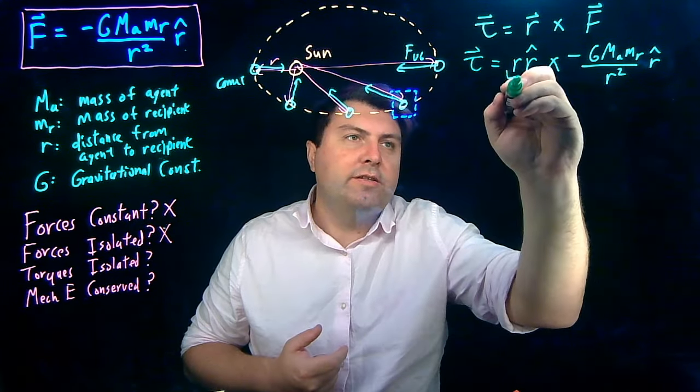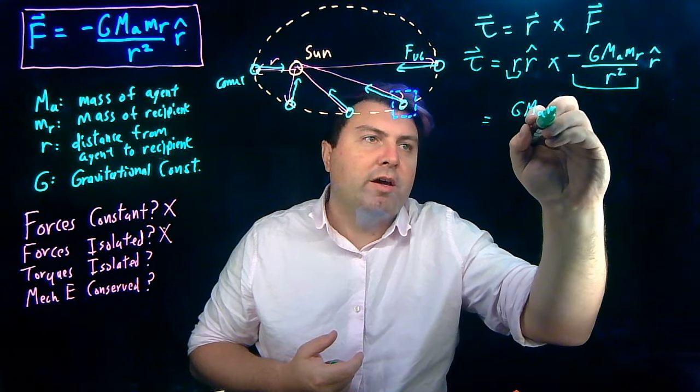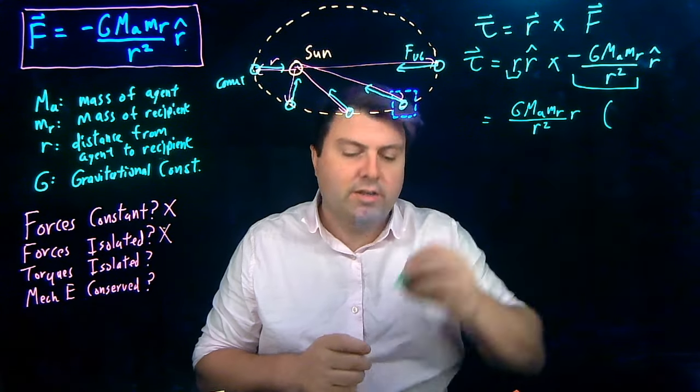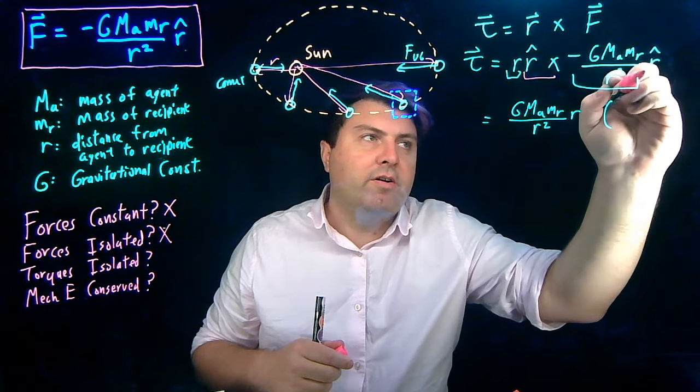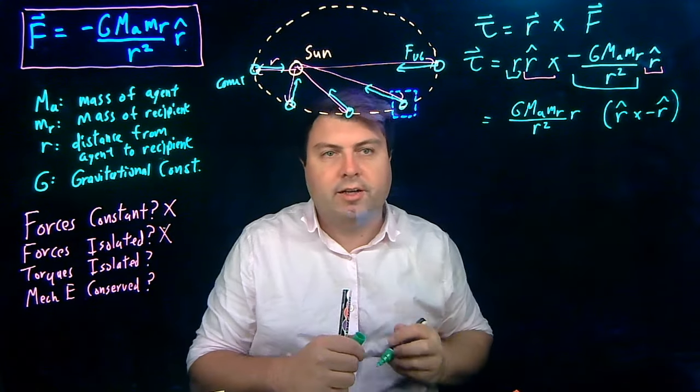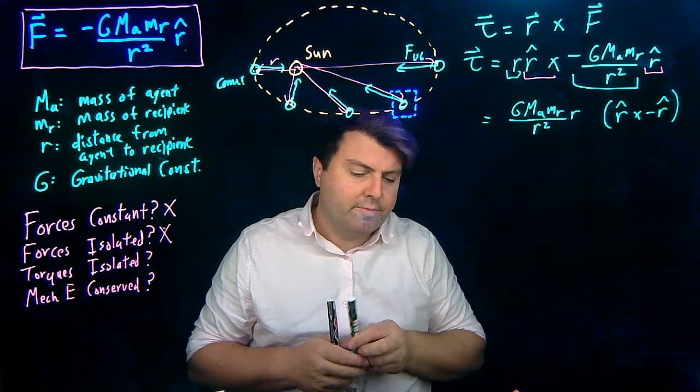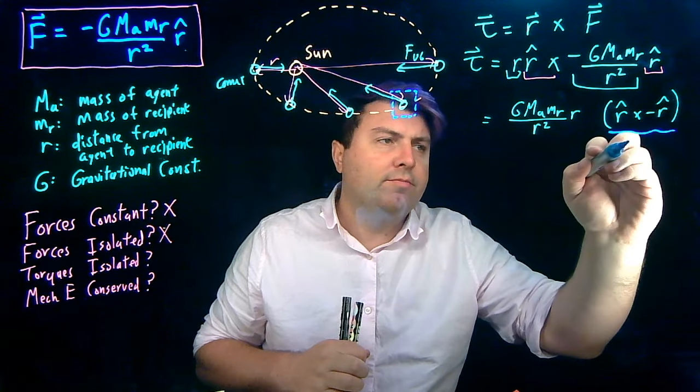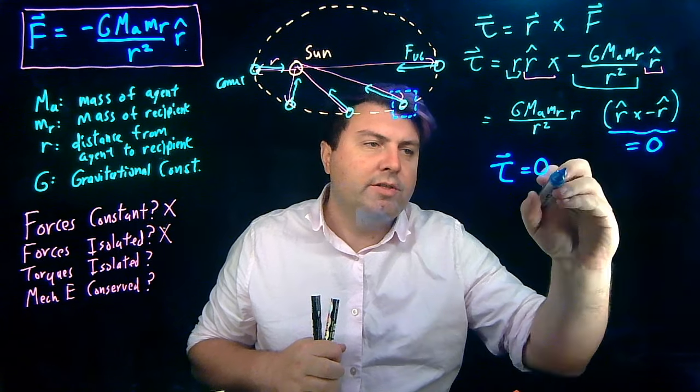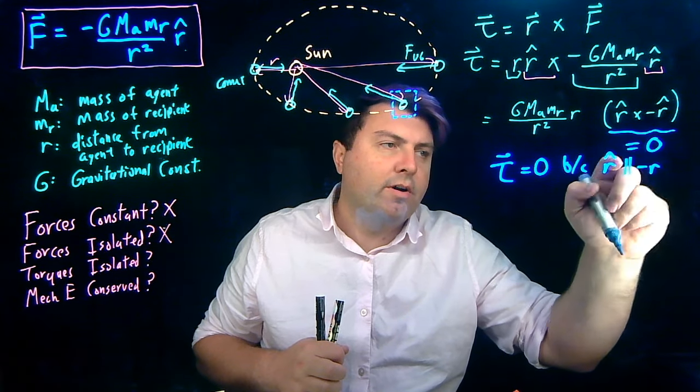So what we can do now is we can see that this is a scalar and this is a scalar. We can bring them over here. So we have G ma mr over r squared times r and we can get some cancellation. What's left over here is we have a cross product, r hat crossed with negative r hat. So we can see graphically that they're 180 degrees apart or we can see mathematically they're 180 degrees apart. No matter where they are if they're 180 degrees apart, this is equal to zero.